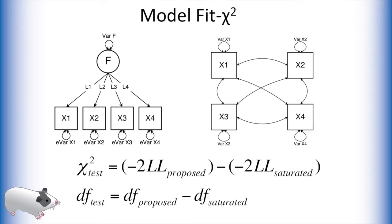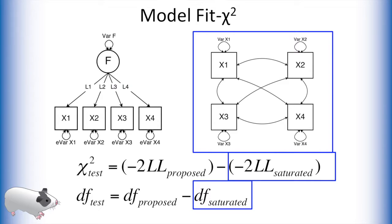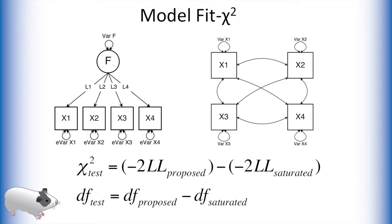The first fit index OpenMx provides is the chi-squared statistic. This is a very simple statistic that first calculates the negative 2 log likelihood of our proposed model, as well as its degrees of freedom. It then subtracts these values from the negative 2 log likelihood and degrees of freedom of the saturated model. The resulting values are then run as a chi-squared test, with the appropriate degrees of freedom. In this way, the chi-squared tests if our proposed factor model is just as likely as the best possible fitting model to the data.